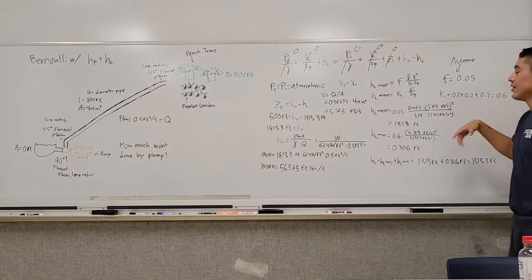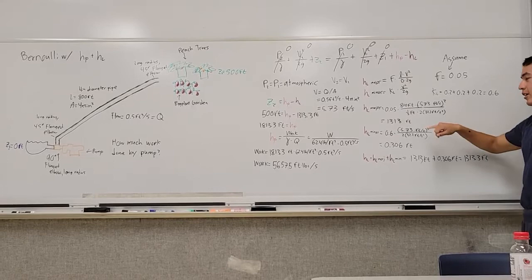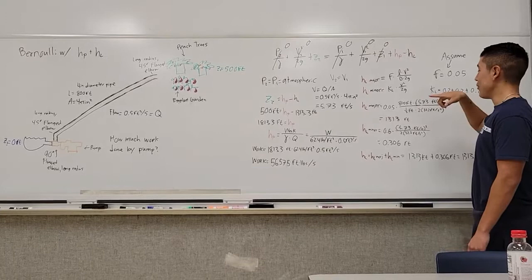Over here, we're solving for head loss. For our major head loss, we're going to say F equals 0.05 just to make things easier. We plug in our known terms into the equation and we get 13 feet of total major head loss.